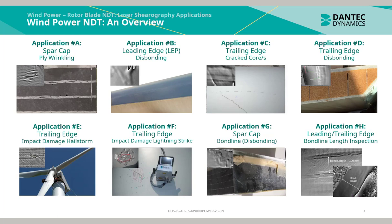Application A is ply wrinkling found within the spar cap. Application B is disbonding within the leading edge protection, also known as the LEP. Application C is a crack cause within the trailing edge. Application D is disbonding within the trailing edge. Application E is impact damage from a hailstorm on the trailing edge. Application F is impact damage caused by a lightning strike on the trailing edge. Application G is bond line disbonding on the spar cap. Application H is a bond line length inspection of the leading and trailing edge.